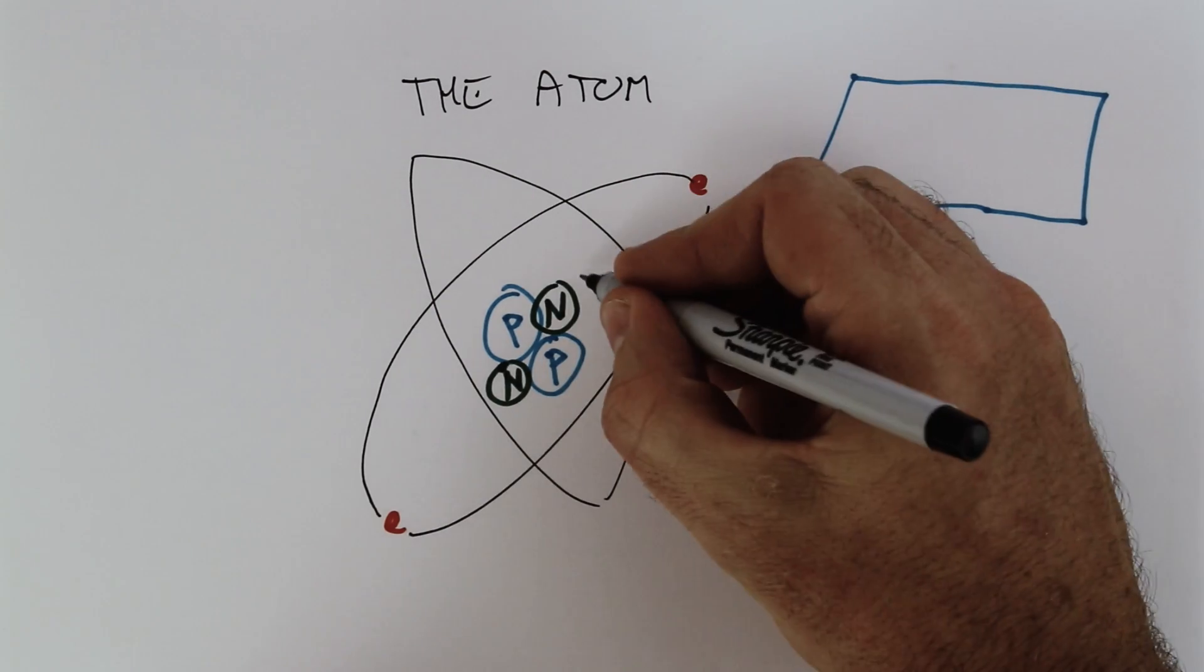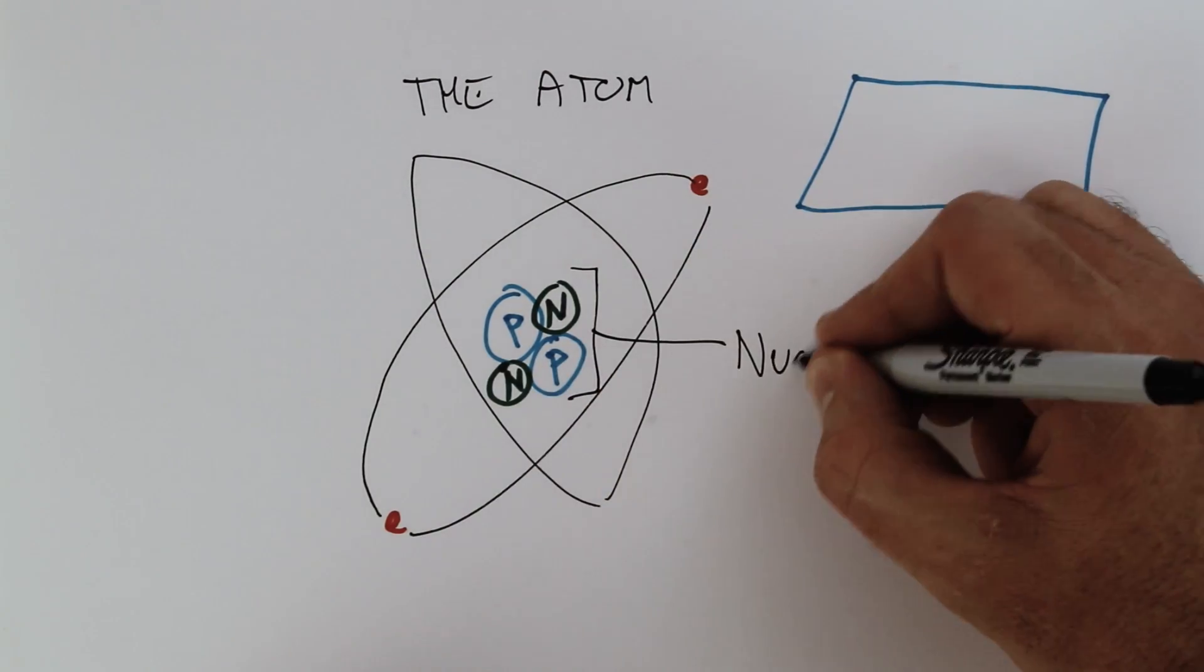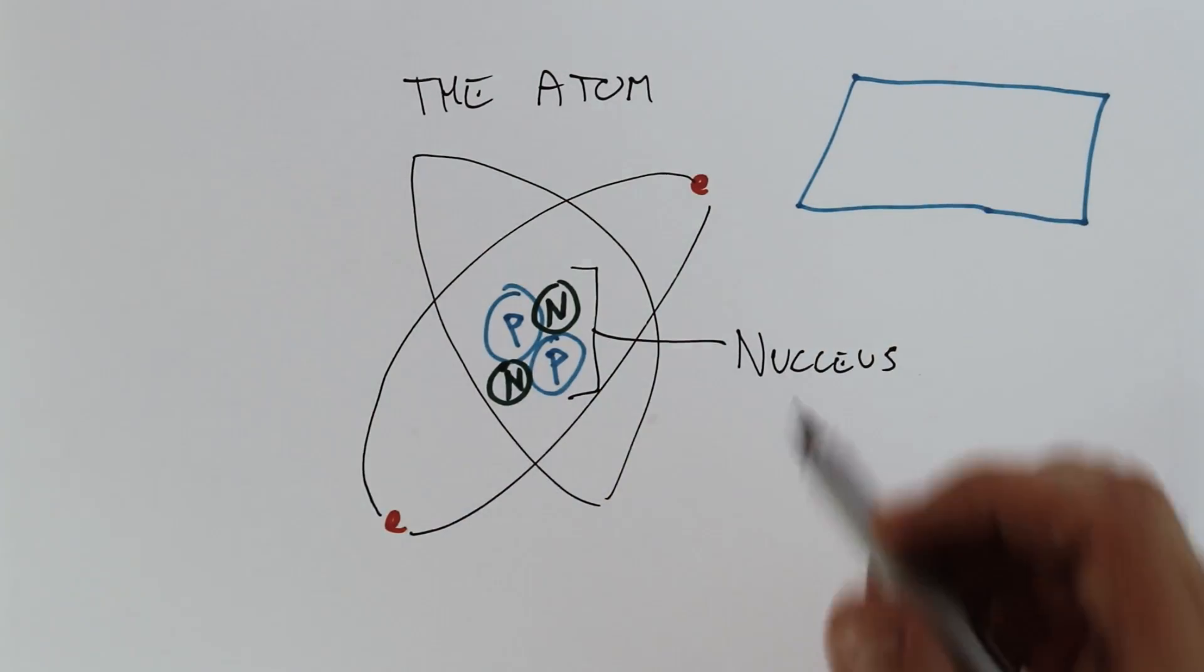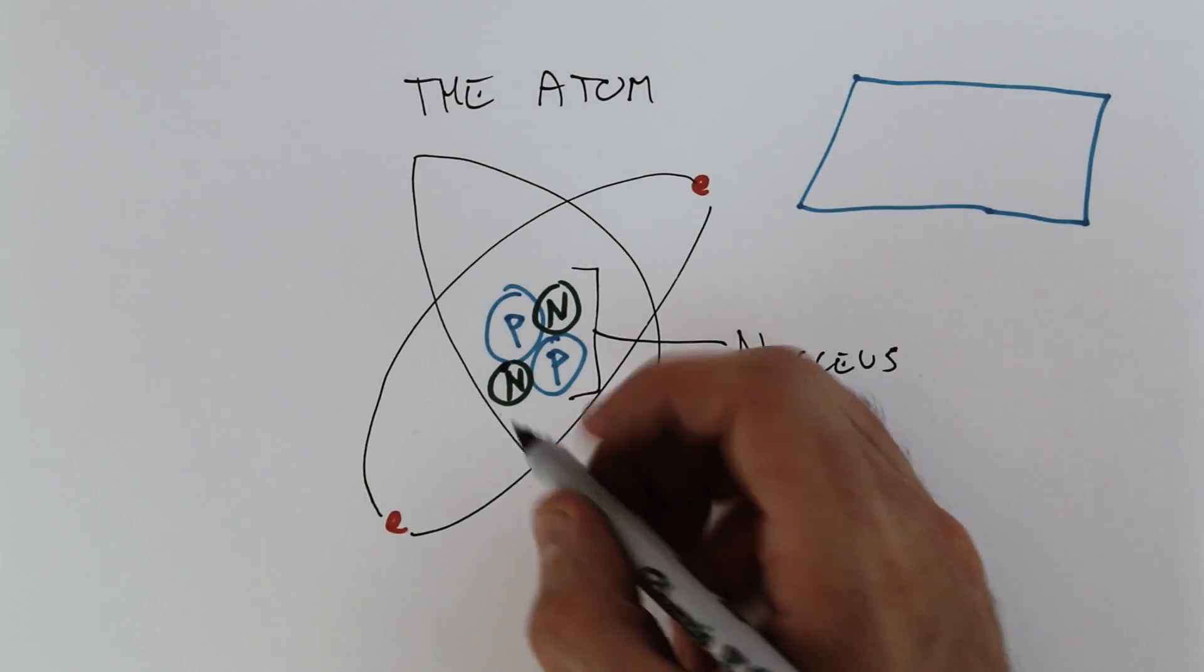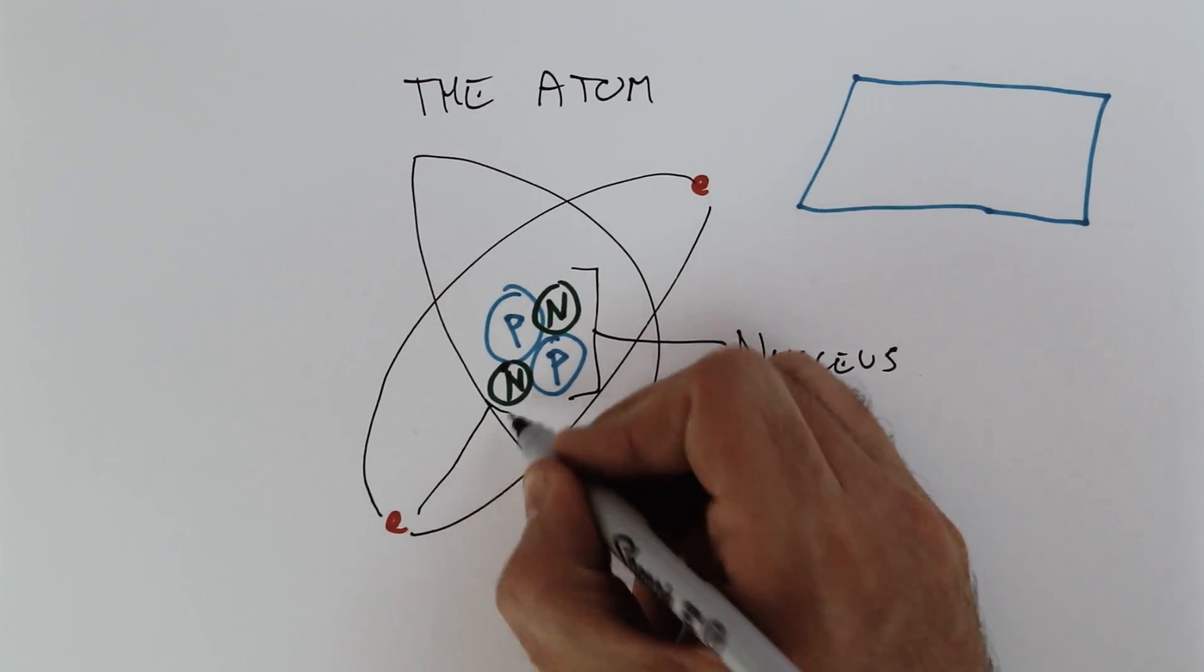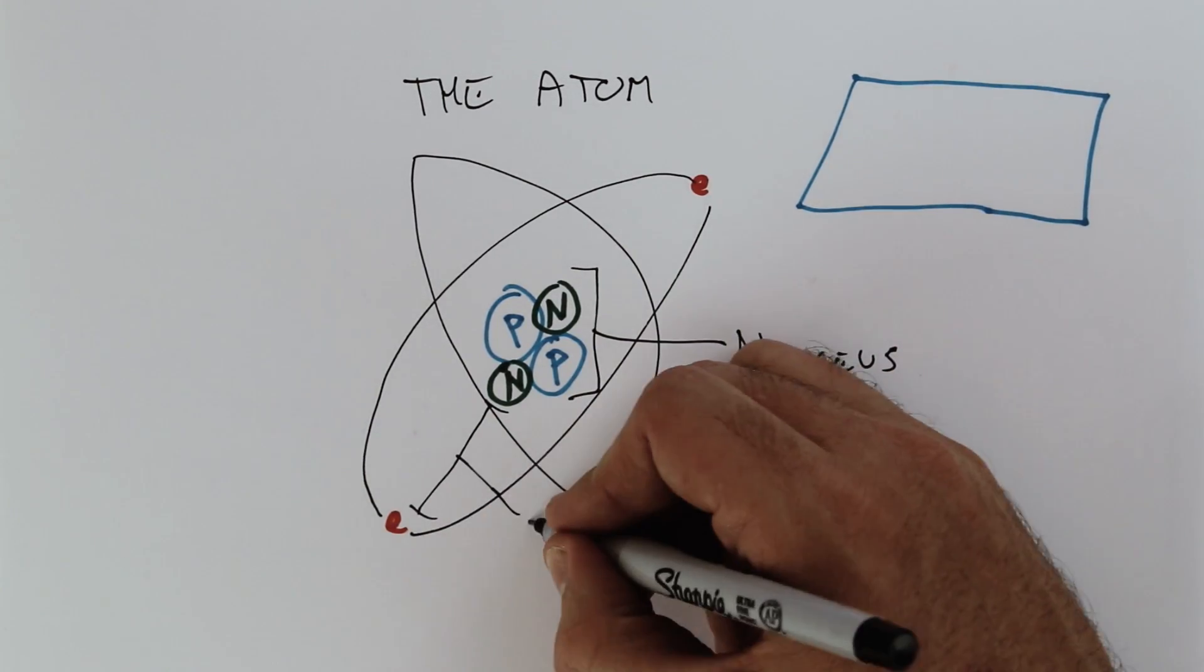Protons and neutrons on the inside in what's called the nucleus. And the electrons are around the outside.